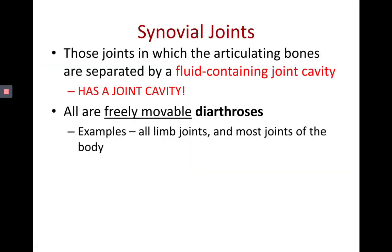Finally we get to synovial joints, which we're going to spend the most time on. Synovial joints are joints that have a joint cavity — unlike fibrous and cartilaginous joints. That joint cavity is like a fluid-containing sac that holds the bones together. All synovial joints are freely movable, meaning functionally they're diarthrotic. So your knee joint, shoulder joint, and hip joint are all synovial joints and also diarthrotic — freely movable.